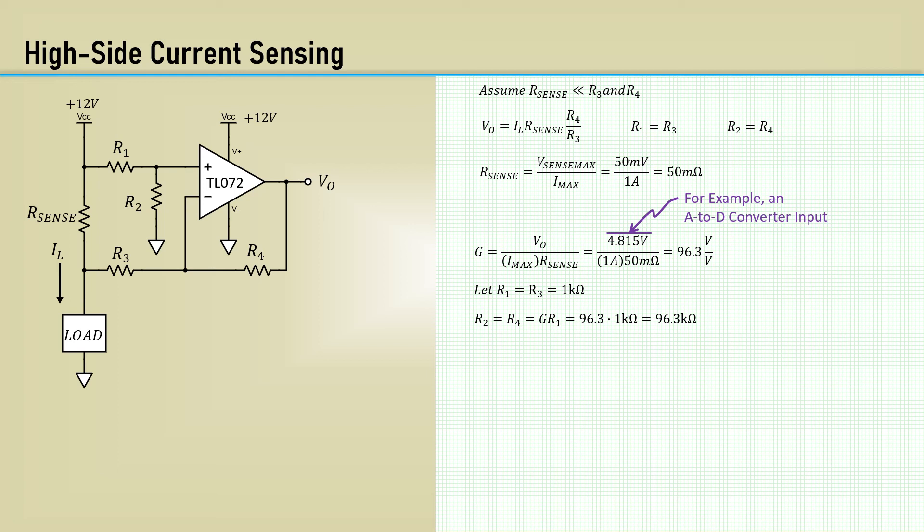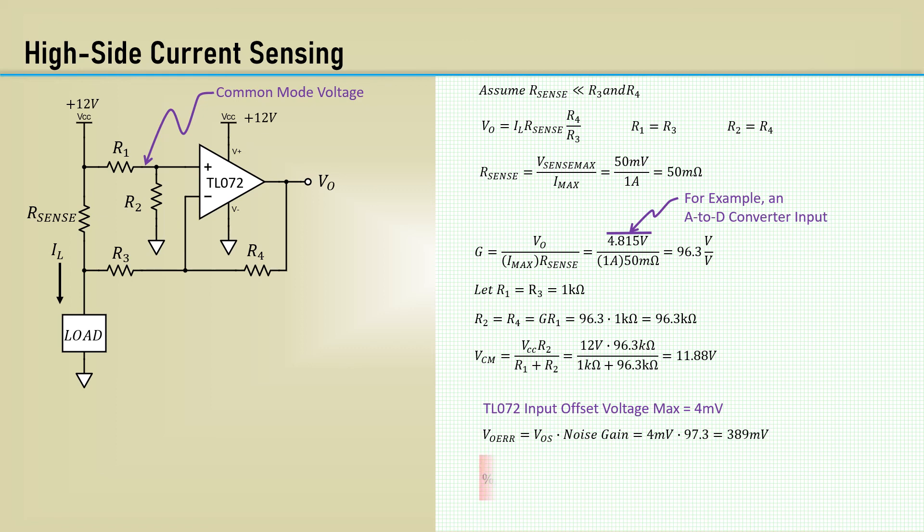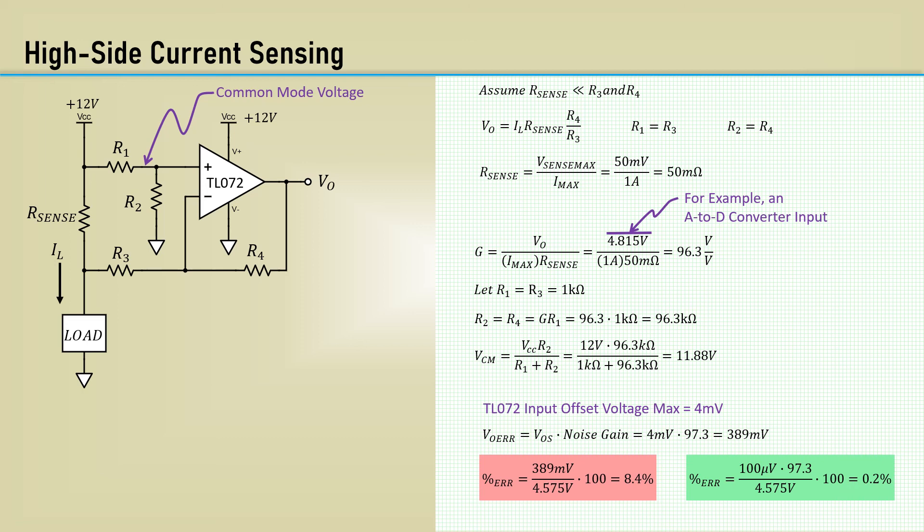It's nice to know what the common mode voltage will be. Of course, it's very important to calculate the DC error caused by the input offset voltage when designing high-gain DC amplifiers. The VOS times the noise gain is 389 millivolts. That's an error of 8.4%. Not so good.